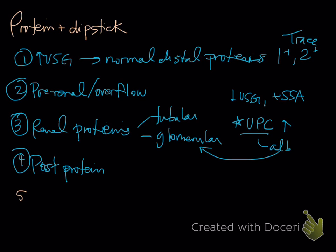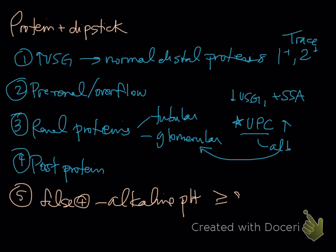The last one to consider is false positive reactions, and this is when we have alkaline urine. Remember, it's a color chemistry change. So we have an alkaline pH, usually a pH that is greater than or equal to 8, so 8 or 9. We get a false positive reaction, and so then we can confirm with an SSA. It's usually less affected by pH, so we would expect then the SSA to be negative if it was not a false positive due to the pH.